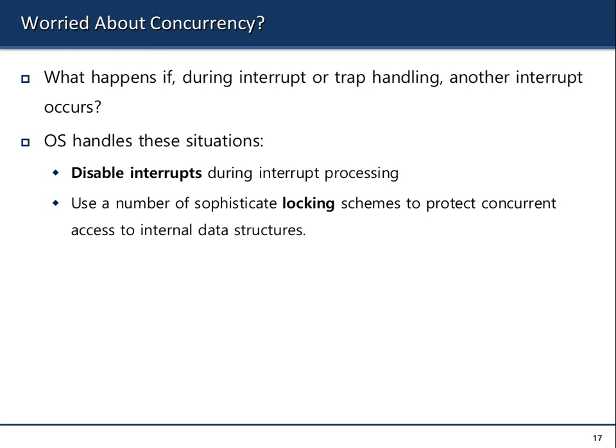One way to handle this is to disable interrupts. For example, the operating system kernel has a linked list it is manipulating, and many processes are accessing it. Whenever concurrent access to a shared data structure happens, you can disable the interrupts.